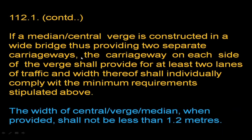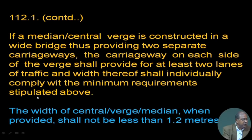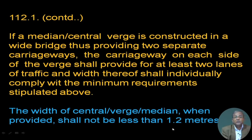The carriageway on each side of the verge shall provide at least two lanes, and each lane shall individually comply with the minimum requirements. The width of the central verge or median, when provided, shall not be less than 1.2 meters.